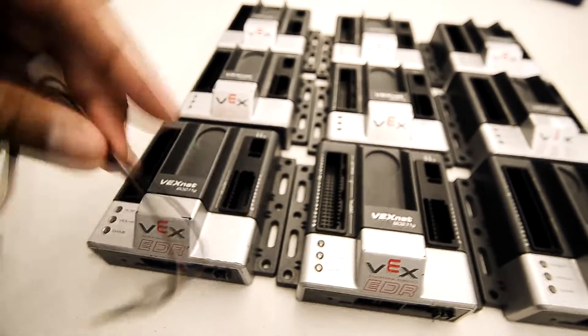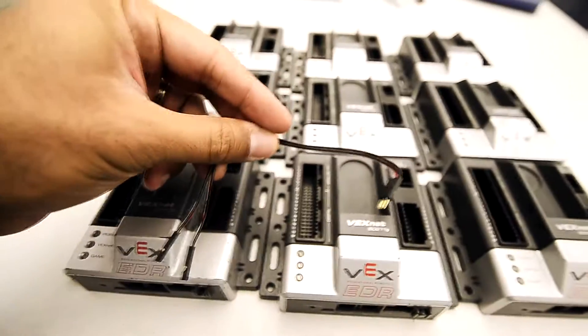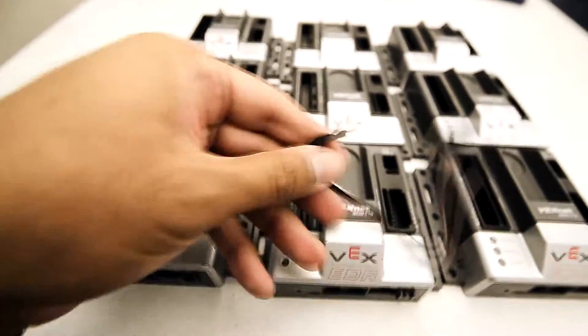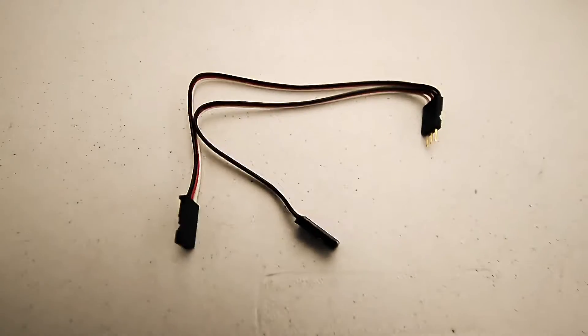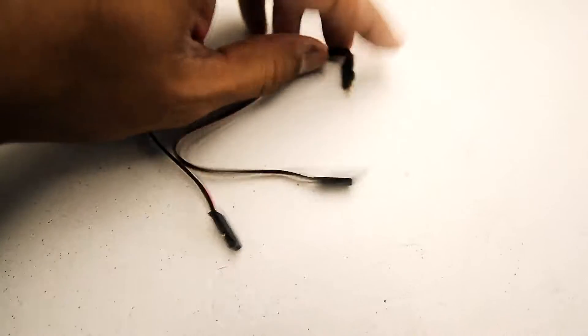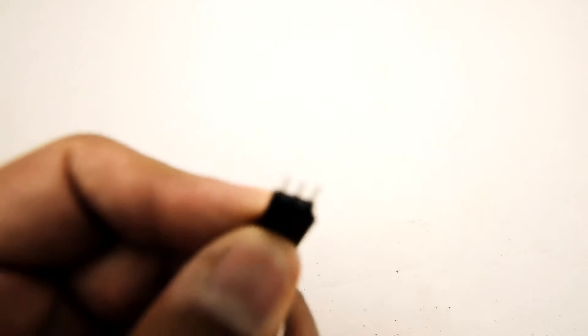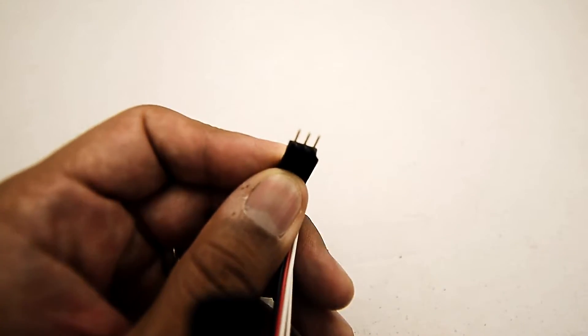One of the things that you're going to need is a Y splitter. It looks like this. It's got the three prongs on one end like that.